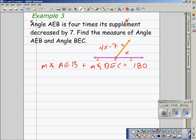For the measure of angle AEB, I'll substitute 4X minus seven. That's from right there. Plus the measure of angle BEC, or X. Make that equal to 180.